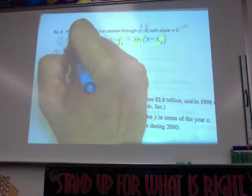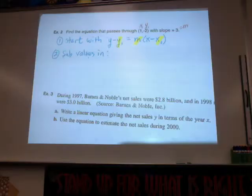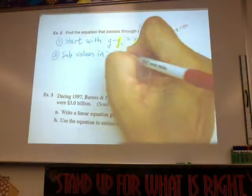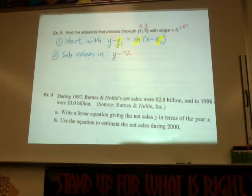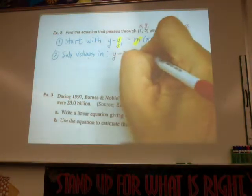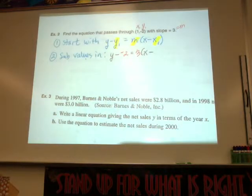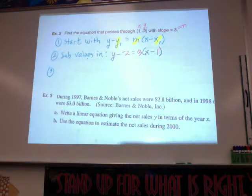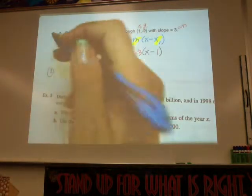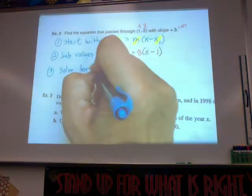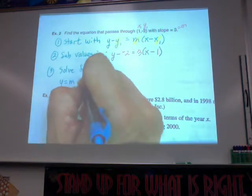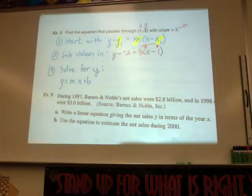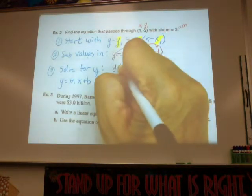So I have y minus — instead of y sub 1, I'm putting in negative 2. Some of you are used to changing that automatically to a plus; that's fine. Equals, and instead of slope m, I'm putting in 3. Times x minus, and instead of x sub 1, I'm putting in 1. Then the final step: if they don't tell you what form to use, always assume slope-intercept form — solve for y, putting it into y equals mx plus b form. Take care of your double negatives — that should be y plus 2 — then distribute your 3.